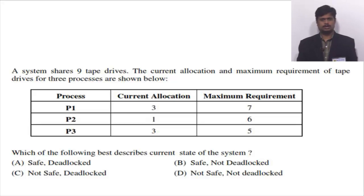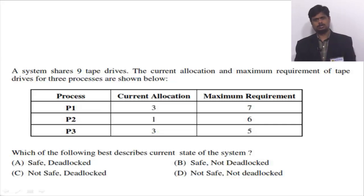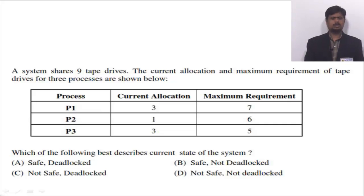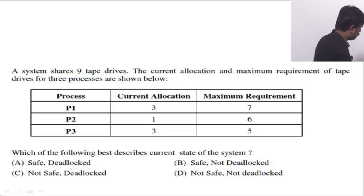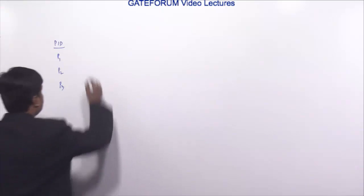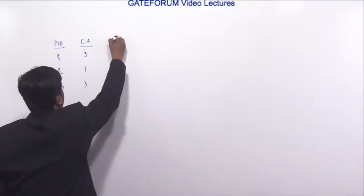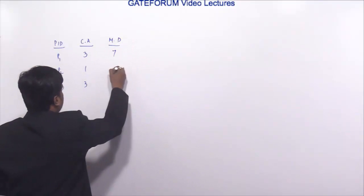This question is from GATE 2017, set number 2 paper, and this question belongs to operating system. A system shares 9 tape drives. The current allocation and maximum requirement of tape drives for 3 processes are: P1, P2, P3 with current allocation 3, 1, 3 and maximum requirement 7, 6, 5. Which of the following best describes the current state of the system? Option A: safe and deadlocked. Option B: safe and not deadlocked. Option C: not safe, deadlocked. Option D: not safe, not deadlocked.